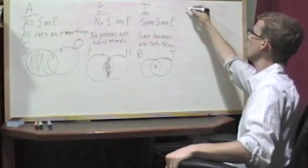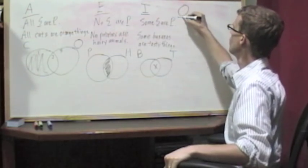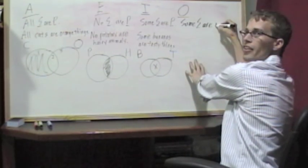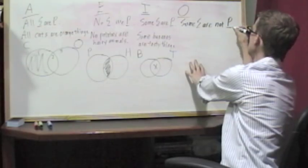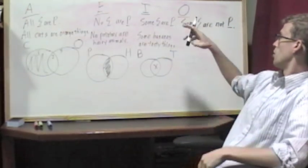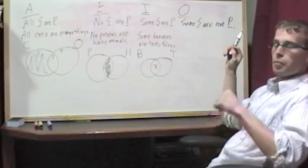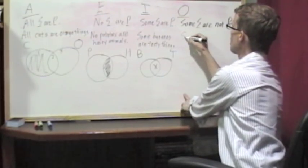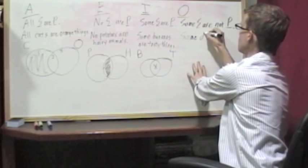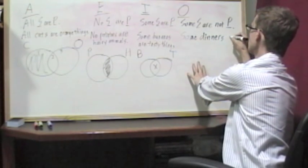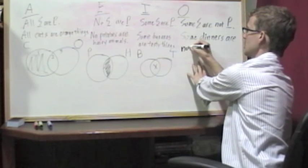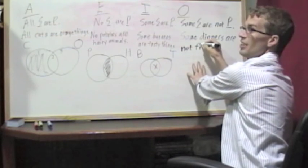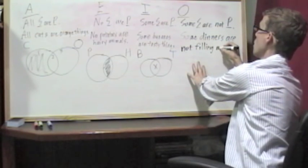Let's see if we have enough room for an O claim. O claim, come on down. Some S are not P. Now, this time I remember the example I used before. Some dinners are not... Oh, I've got tasty there. We've got filling here. Filling meals.